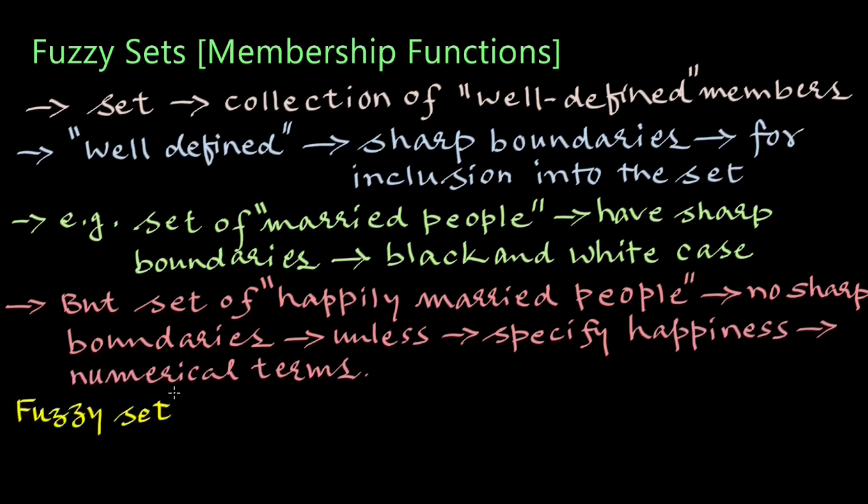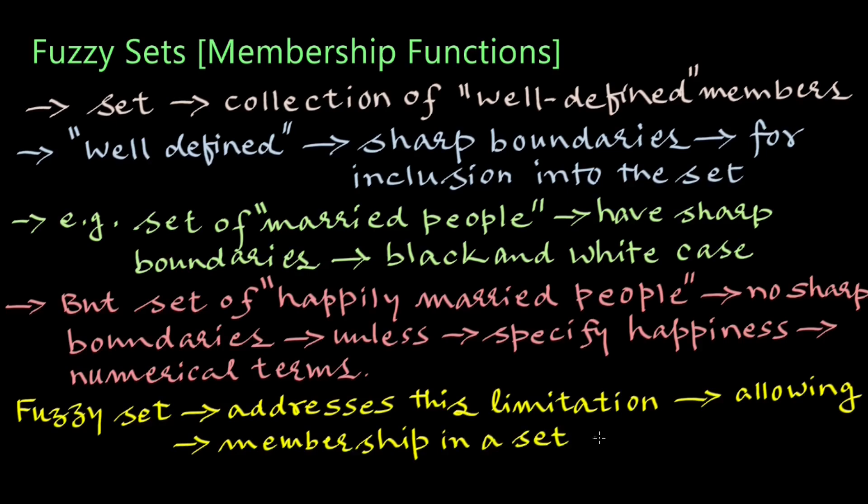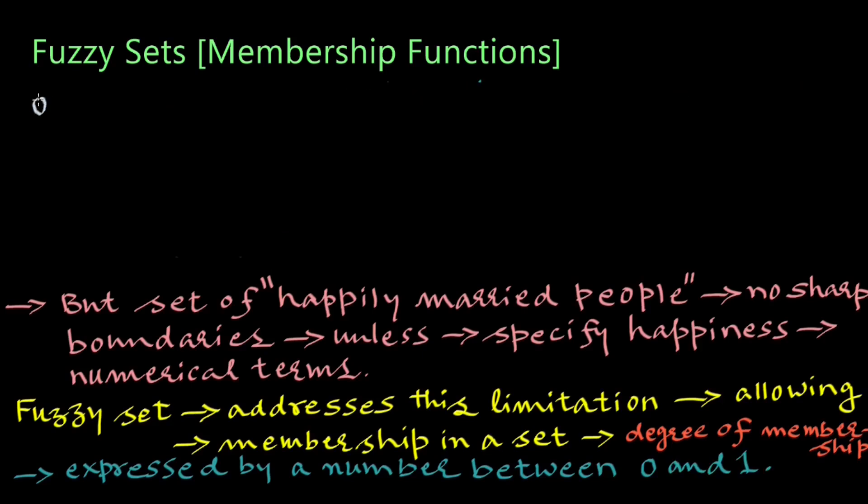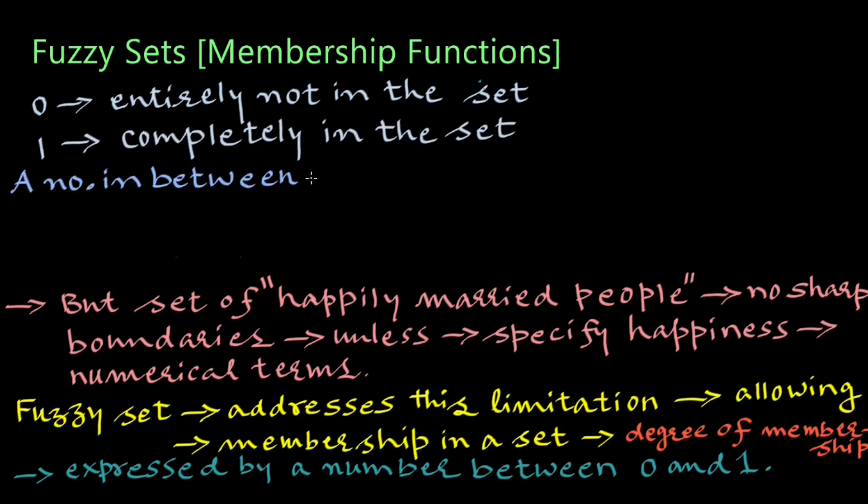Fuzzy set theory directly addresses this limitation by allowing membership in a set on the basis of degree of membership. This degree of membership in a set is expressed by a number between 0 and 1. 0 means entirely not in the set, 1 means completely in the set, and a number in between means partially in the set.